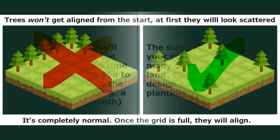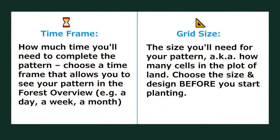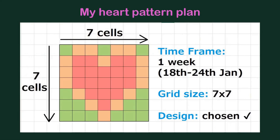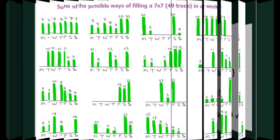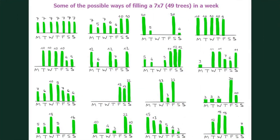Now to make a pattern you must first choose the time frame and grid size. Let's say I want to make a pattern in a week — so that would be my time frame — and I want to make it a 7x7 grid. That means that within that week I'll have to plant 49 trees. I decide to do it by planting 7 trees each day of the week, but you can plant as many as you want, and you don't have to plant every day.